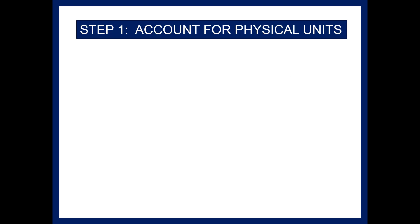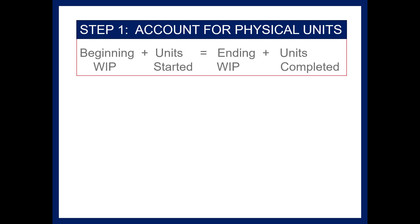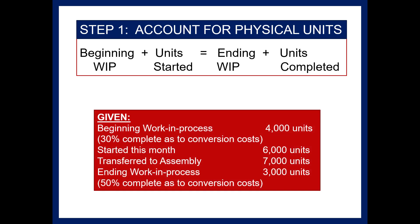The first thing we'll do is account for the physical flow of units. The formula is: beginning work in process plus units started equals ending work in process plus units completed. We began with 4,000 units and started 6,000 more, meaning we worked on 10,000 units total. Of those, 3,000 are still in ending work in process and 7,000 are finished.